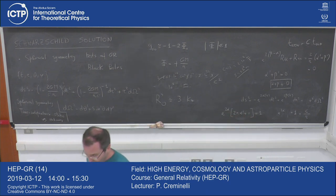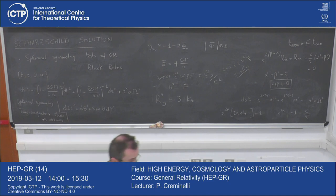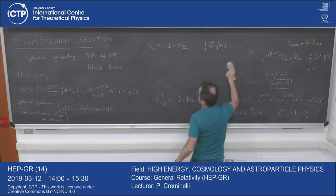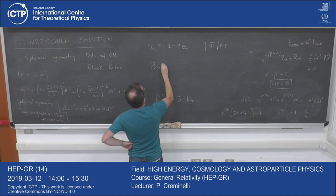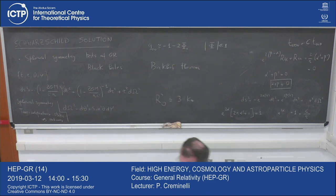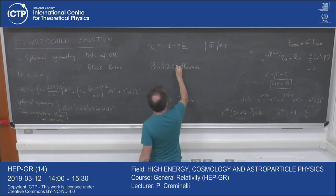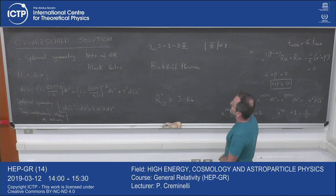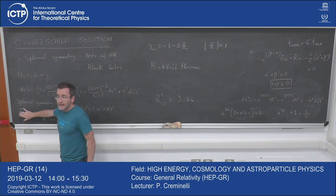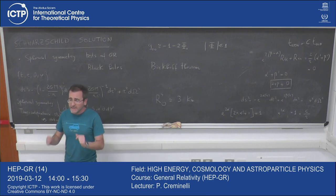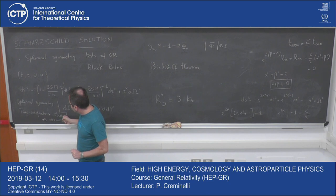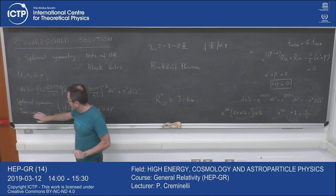The last piece of information before concluding is something important that you should know: it's what is called Birkhoff's theorem. What does this theorem say? Imagine that I drop the assumption of time independence — I do not assume that the metric is static or stationary. Even without this assumption, imposing only spherical symmetry, one still obtains the Schwarzschild solution.